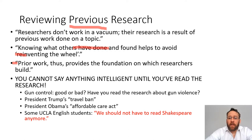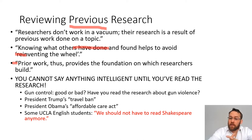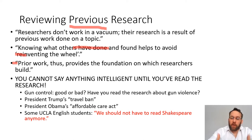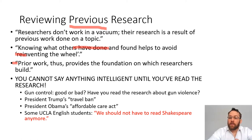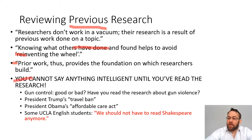Prior work provides a foundation on which researchers build new arguments. Just because you're building on previous research doesn't mean you agree with it or don't find faults in it. I've cited people in my own work and then in the next paragraph said I think they're wrong, their methods are wrong, and their conclusions are wrong. Just because you cite people doesn't mean you agree with them, but if they're an important pillar of the conversation, you need to cite them — if nothing else to say you think they misinterpreted something. You cannot say anything intelligent until you have read the previous research.